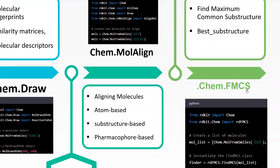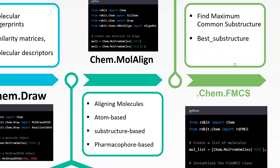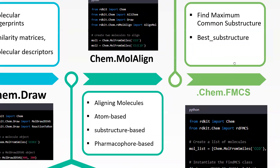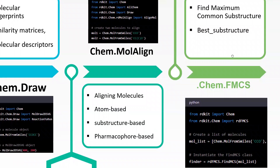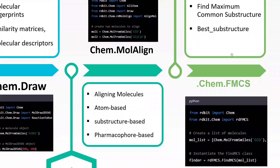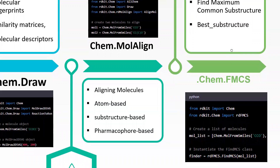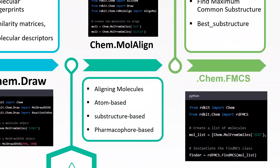The next library is rdkit.Chem.fmcs. This module provides functionality to find the Maximum Common Substructure (MCS). It provides all the functionalities to handle substructure identifications, whether best substructure or ring-based, and provides all those features for handling substructures.